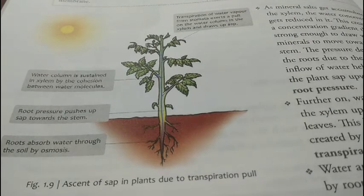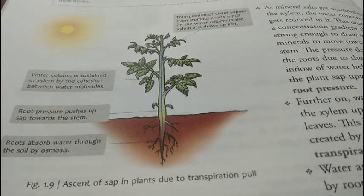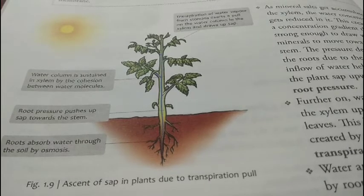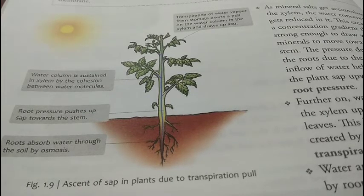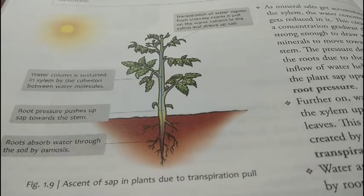Roots में root pressure के वजह से cell to cell osmosis हो रहा था जिसके वजह से water और minerals xylem tissue तक पहुँचे। वहाँ से transpiration के वजह से जो suction pull create हुआ, उस pull के वजह से xylem vessel gravity के विरुद्ध water और minerals को ऊपर खींच ले जाती है — यह transpirational pull है। यह water और minerals को stem, leaves, flowers तक पहुँचाती है, because water is necessary for each and every living cell of the plant body।